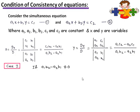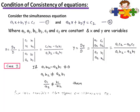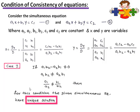Shift a2·b1 to the other side and you get a1·b2 = a2·b1. Then bring a2 under a1 and b2 under b1. So the condition becomes a1/a2 is not equal to b1/b2. For such a condition, the given simultaneous equations have a unique solution — you get one solution. Okay.